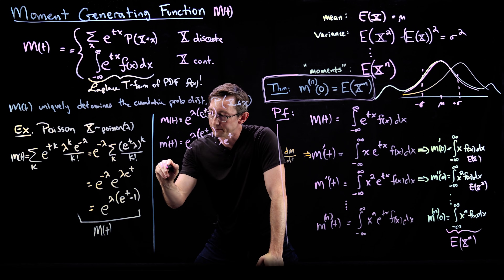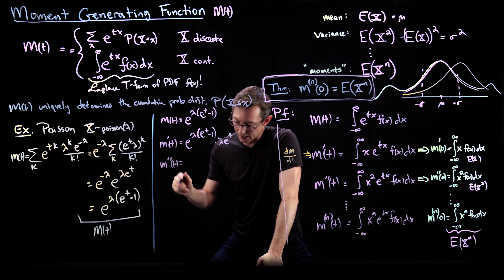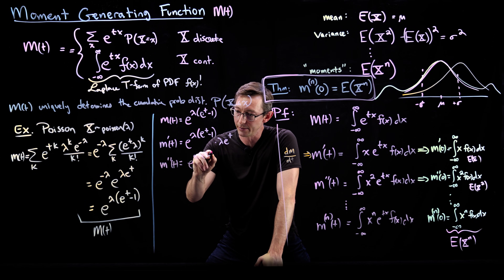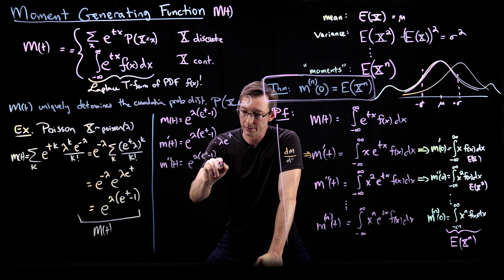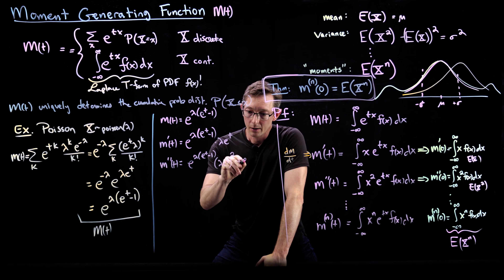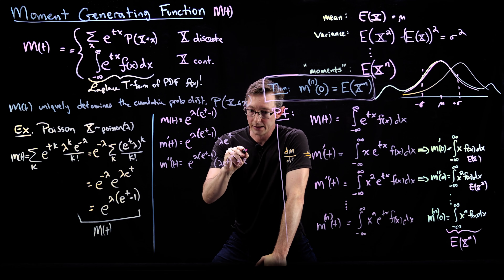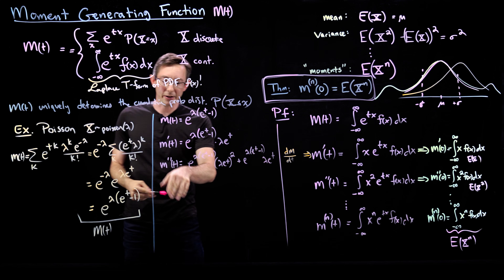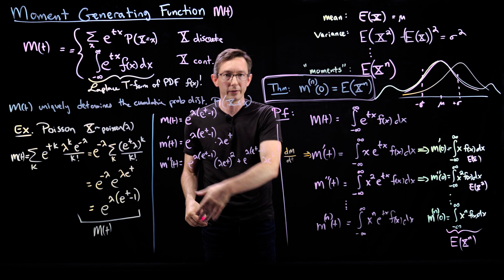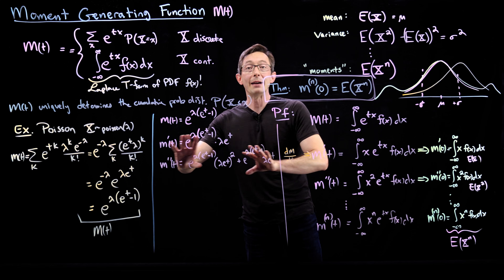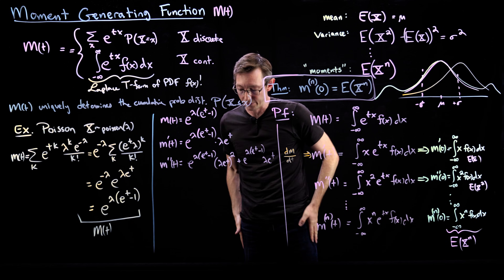m double prime of t is e to the lambda e to the t minus one, times lambda e to the t, squared, plus e to the lambda e to the t minus one, times lambda e to the t. You can compute the third derivative, fourth derivative, and so on. These are the first and second derivatives — that's the basic template here.